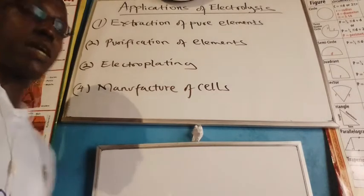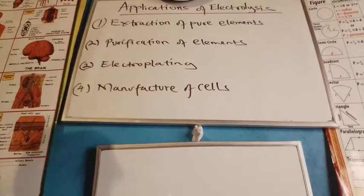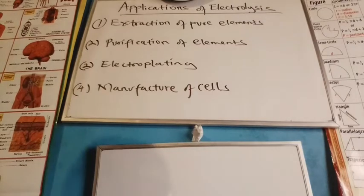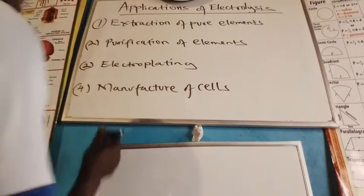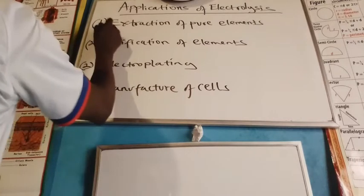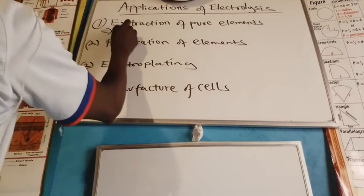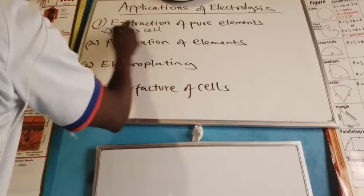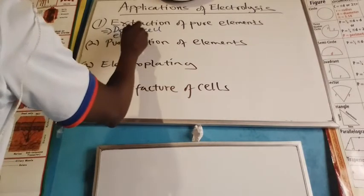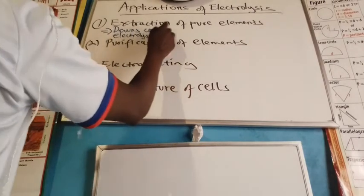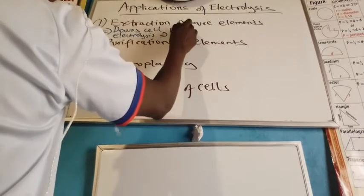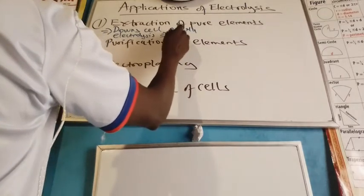Welcome. The first application of electrolysis is the extraction of pure elements. And this could be done in different ways. In the down cell electrolysis, we could extract pure sodium and pure chlorine.